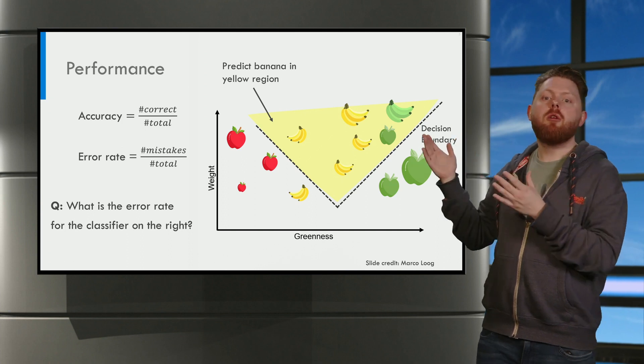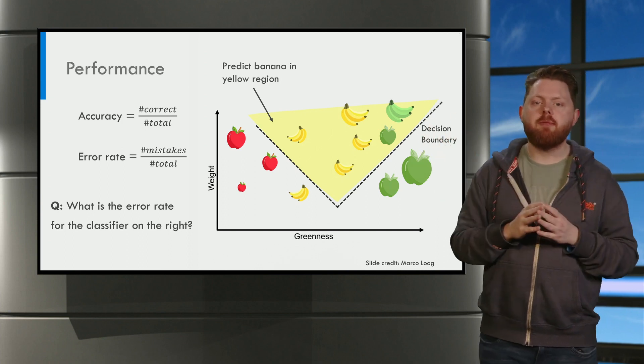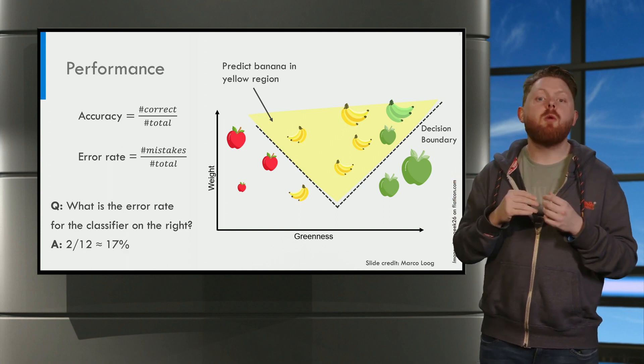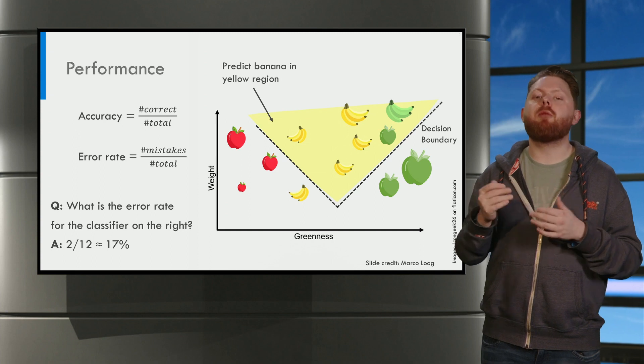There are a total of 12 objects. Thus, the error rate is 2 divided by 12, which is approximately 17%.